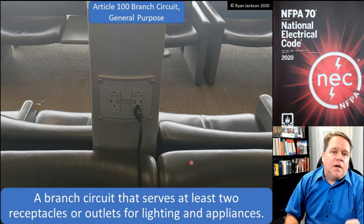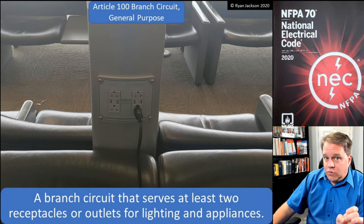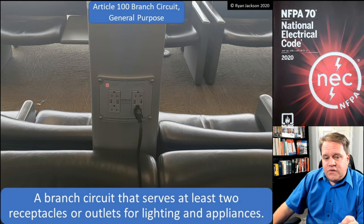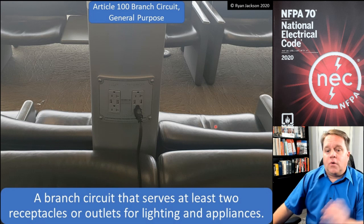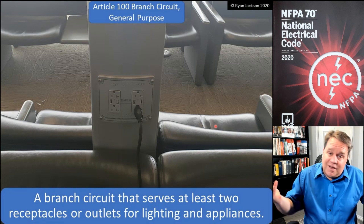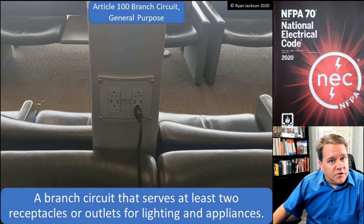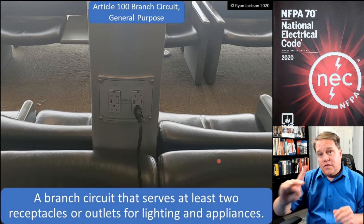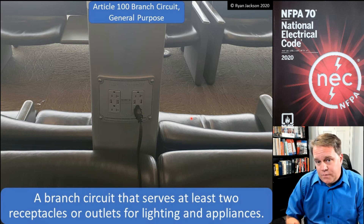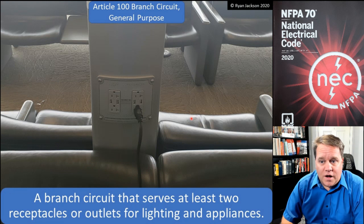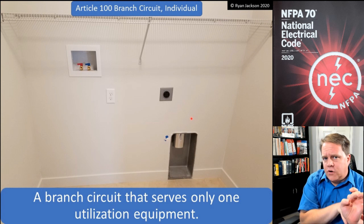A general purpose branch circuit is a branch circuit that serves at least two receptacles or outlets for lighting and appliances. A duplex receptacle is two receptacles, so the second you install a duplex receptacle, according to the definition, it's a general purpose branch circuit. If I had cut the tabs and had four different circuits serving those four receptacles, then those would not be a general purpose branch circuit unless there was something else on the circuit as well.